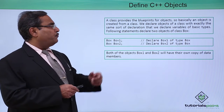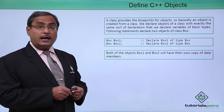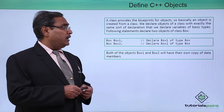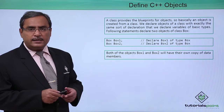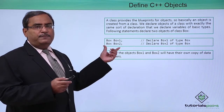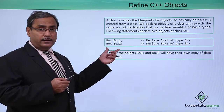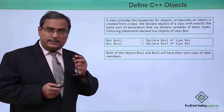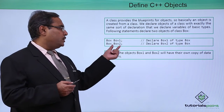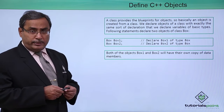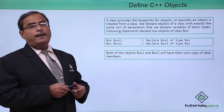A class provides the blueprints for objects — basically, an object is created from a class. We declare objects of a class with exactly the same kind of declaration we use for variables of basic data types. For example, just as we write 'int i;', we define two objects under class box: 'box box1;' and 'box box2;'. Both objects box1 and box2 will have their own copy of data members.